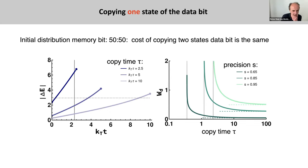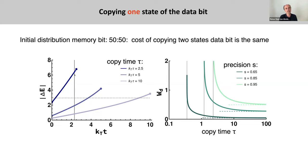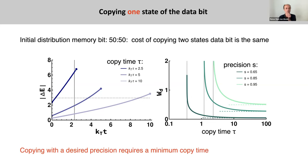We consider copying the state of one data bit and assume the initial distribution of the memory bit is 50/50. Here you see the energy change as a function of time for different total copy times. The dashed line is the energy difference that yields the desired accuracy in the quasi-static limit — the equilibrium distribution consistent with the required precision. When the copy time gets shorter, you have to push the system more out of equilibrium. There is a minimal copy time at which this work diverges to reach a desired accuracy, and the larger the required accuracy, the larger this minimal copy time must be.